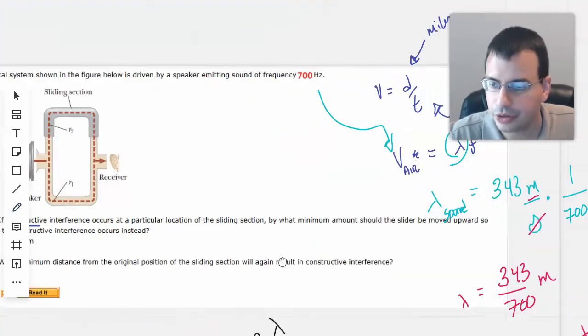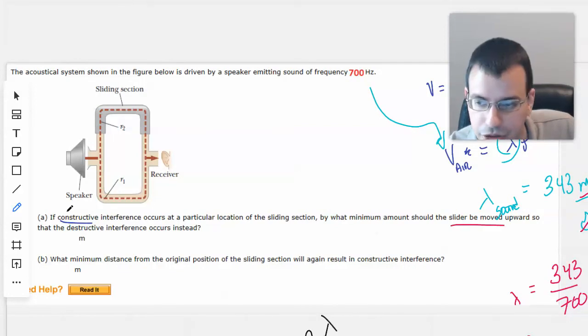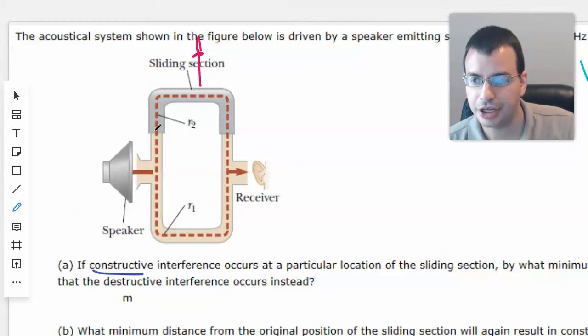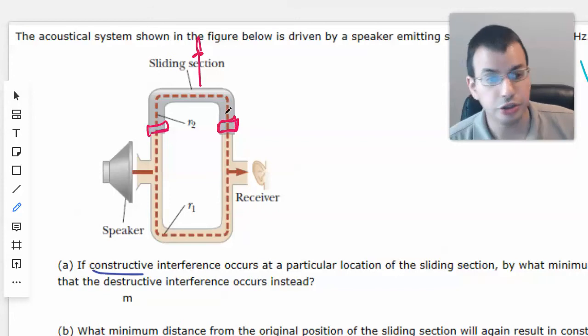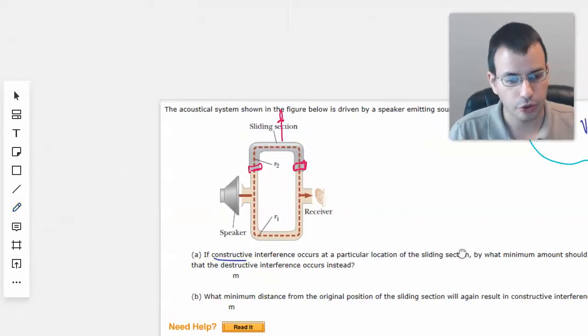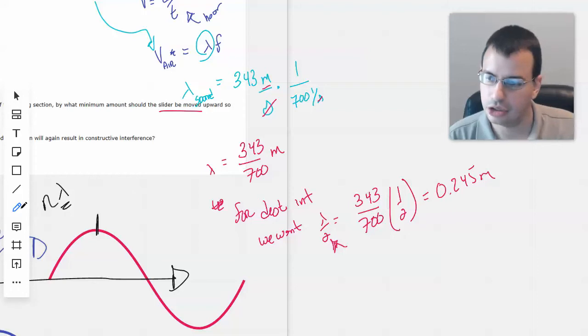Equals 0.245 meters. So now, though, the question is, by what minimum amount should the slider be moved upward so that the destructive interference occurs? So when this slider moves up, you're going to get an extra bit of space here and an extra bit of space here. So it's going to actually have twice the impact that you would think that it would.